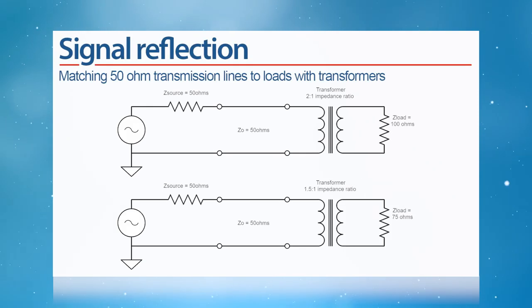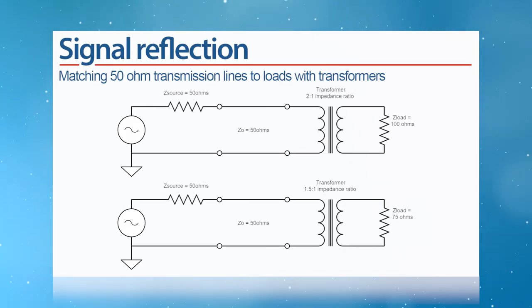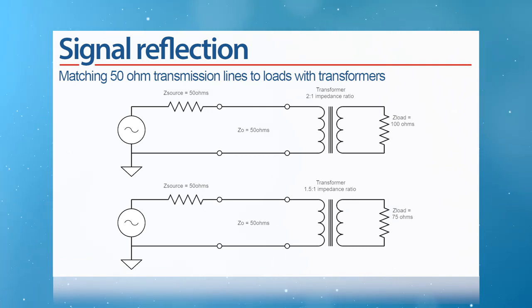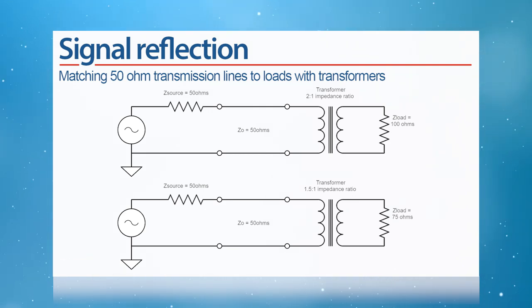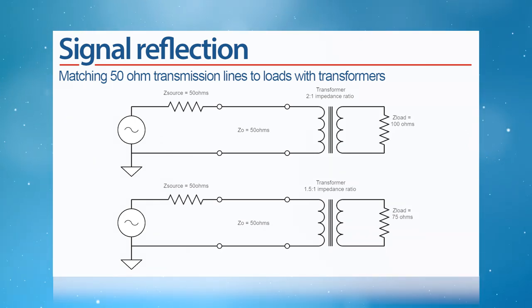Transformers also allow a circuit to match lines of different impedances. Given the right balun, a signal riding on your 50 ohm line won't see an impedance mismatch when transitioning to commonly used 75 ohm and 100 ohm balanced lines.